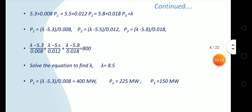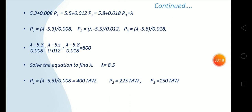We can write the incremental transmission costs as equal and equal to lambda. So P1, P2, and P3 can be written in terms of lambda as: P1 = (lambda - 5.3)/0.008, P2 = (lambda - 5.5)/0.012, P3 = (lambda - 5.8)/0.018. Substituting into P1 + P2 + P3 = 800 and solving, we get lambda = 8.5. Then we substitute this value of lambda into the equations for P1, P2, and P3.